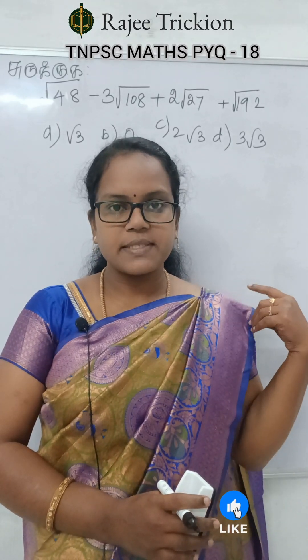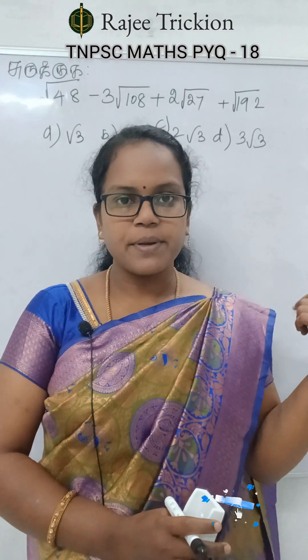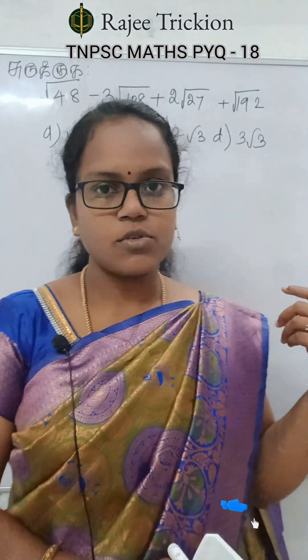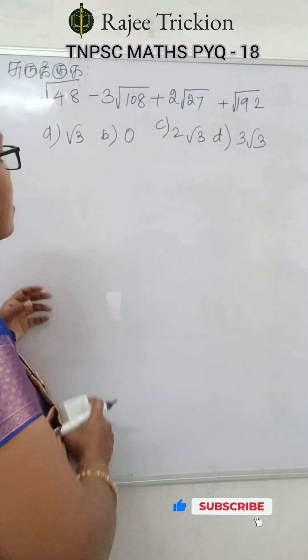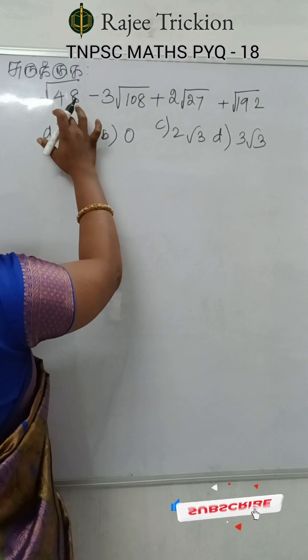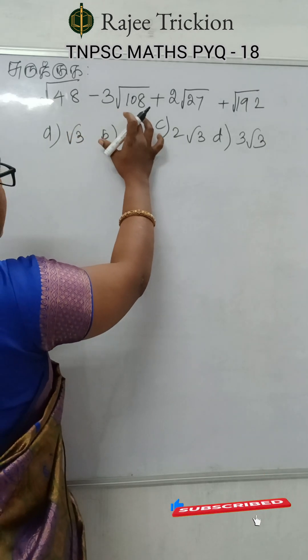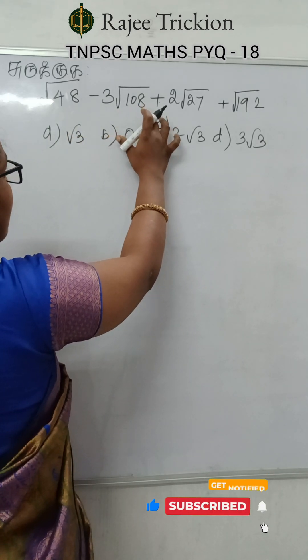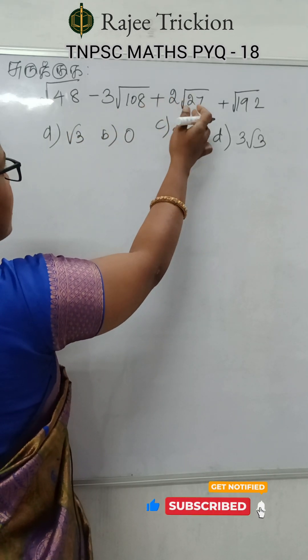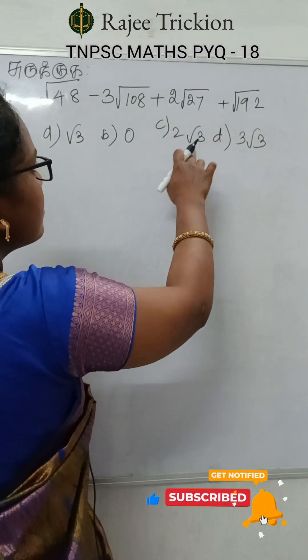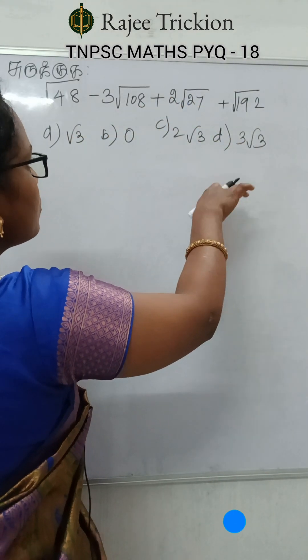Welcome everyone. How do you solve this sum? Let's get a question. In the beginning: root of 48 minus 3 into root of 108 plus 2 into root of 27 plus root of 192.